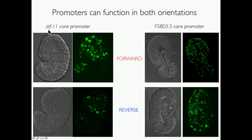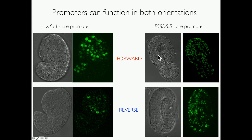For ZTF11, we see a full expression pattern in the forward orientation, while in the reverse orientation the promoter has a subset pattern of the forward. This is not true for the other promoter, F58D5.5, where we see a similar pattern of expression in both the forward and reverse orientations.